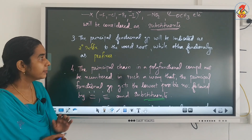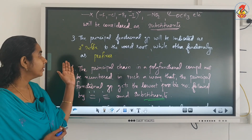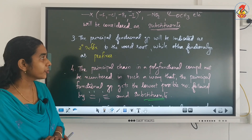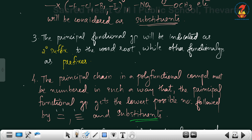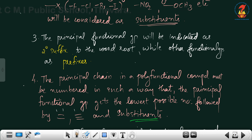The principal functional group will always be indicated as a secondary suffix after the word root or after the primary suffix, while other functional groups will be written as prefixes only. The principal chain in a polyfunctional compound must be numbered such that the principal functional group gets the lowest possible number, followed by double bond, triple bond, and then substituents.